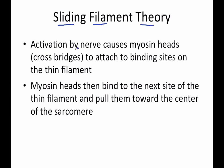The sliding filament theory is the theory of how muscle fibers slide past each other. How do you cause a contraction? The activation by nerves causes the myosin heads, or those cross bridges, to attach to binding sites on the thin filament. The myosin heads bind to the actin sites on the thin filament and pull them towards the center of a sarcomere.